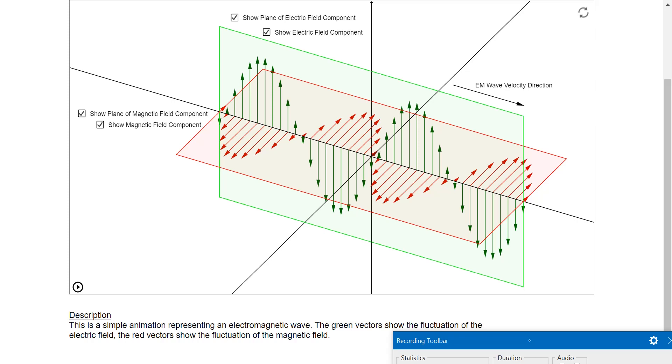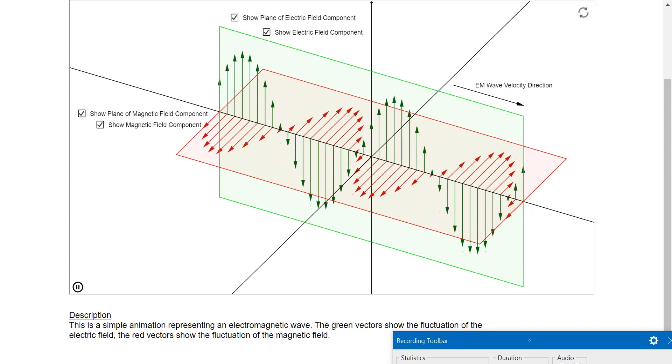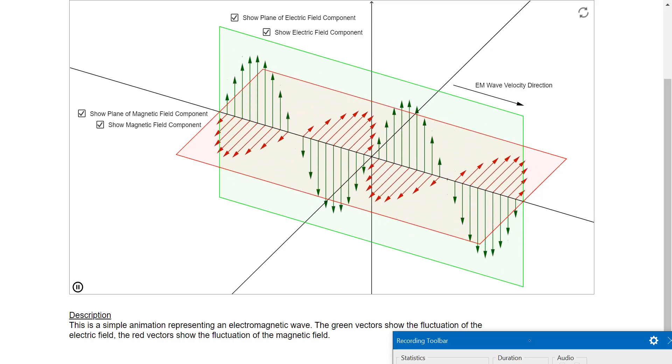This is the magnetic field, and let's say that it varies along the y-axis. Now the direction of the wave propagation is along the z-axis, which is showing here as EM wave velocity direction. Now I will play it. So this is a very beautiful illustration that magnetic field varies along the y-axis, electric field varies along the x-axis, which is upwards, and direction of transmission is the z-axis, which you can take as the axis which is shown according to this arrow, EM wave velocity direction.